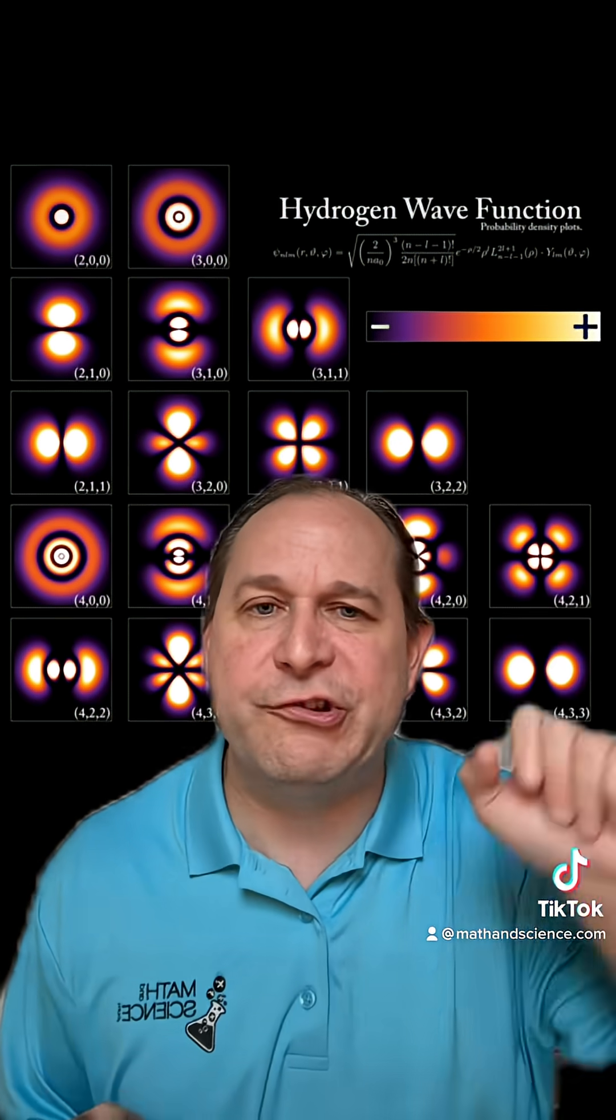And the wave function that governs the electron really represents the probability of finding the electron when you measure it. But when you're not measuring it, it exists in a wave-like state that has these beautiful shapes around the hydrogen atom.